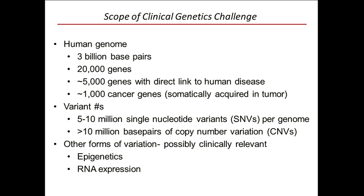What's the scope of genetics? Some people might say, why don't we just do whole genome sequencing on everyone? Well, the problem is very sizable. The haploid genome has three billion base pairs and 20,000 genes. Outside of cancer, about 5,000 genes are linked to Mendelian disorders. Somewhere between 500 and 1,000 genes have been associated with cancer as somatically acquired. It's a big problem we'd like to reduce to practice.